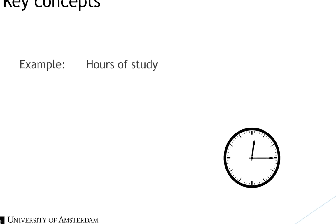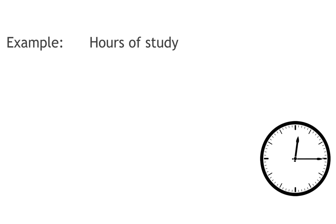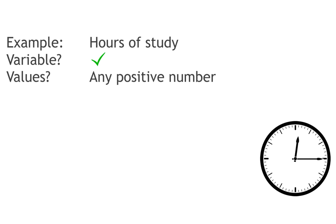Let's consider the key concept 'hours of study' as an example. Is this key concept a variable? Yes, because it can take on different values. And which values can it take on? Hours of study can only take on positive values, and we could, for instance, decide to include all possible values.